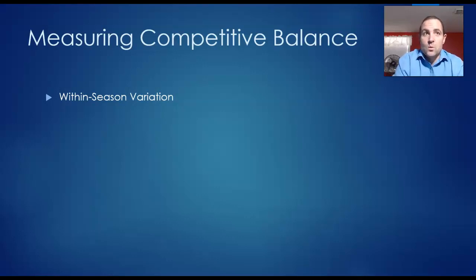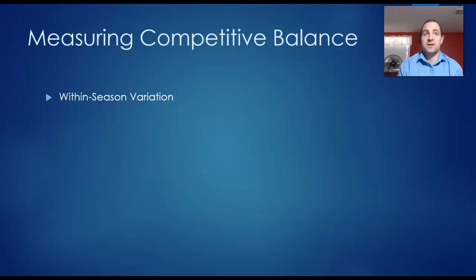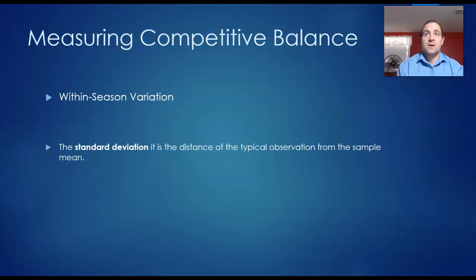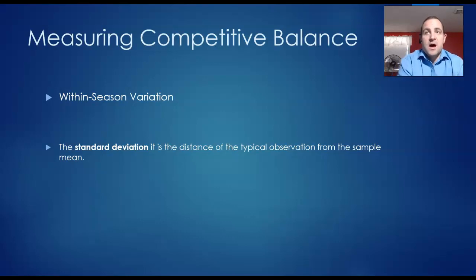Within-season variation in winning percentages focuses on the overall evenness of competition over the course of a season. The measure of the within-season variation starts with the standard deviation of winning percentages. If you haven't taken statistics, the standard deviation is the distance of a typical observation from the sample mean.